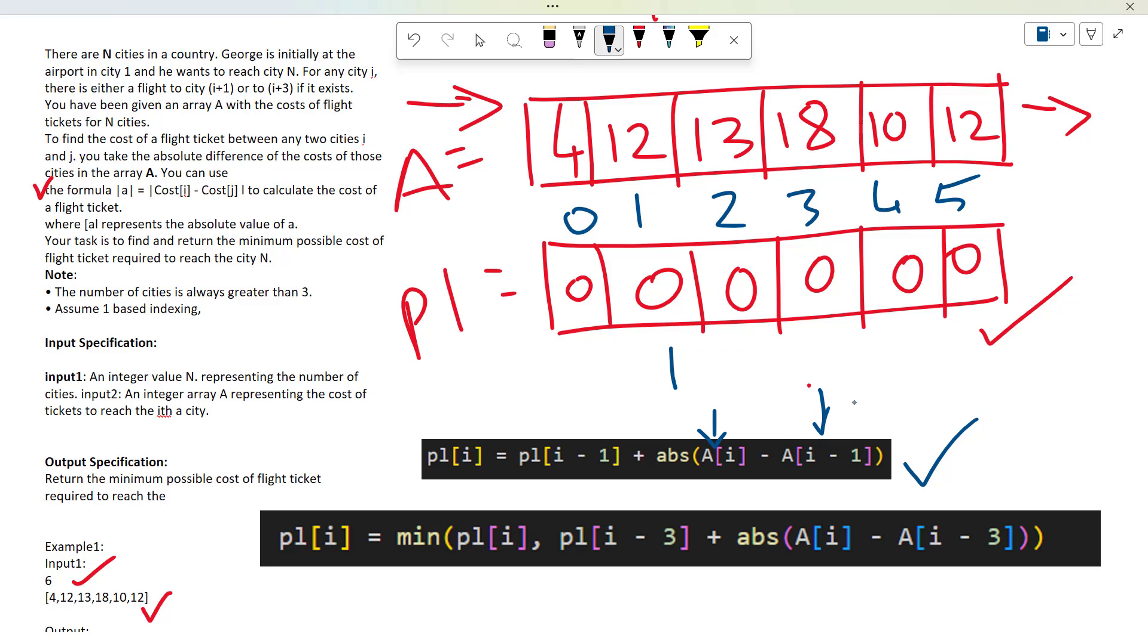12 minus A[i-1], which is A[0], so 12 minus 4, which is 8. So I can write here 8. In this way, we need to move forward till we reach the end of the array.